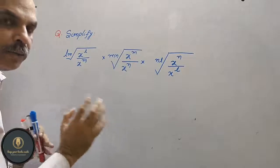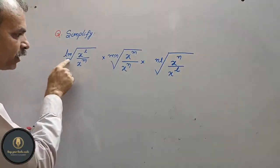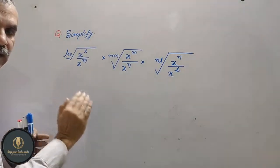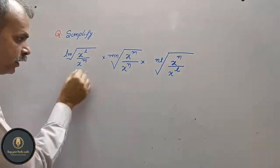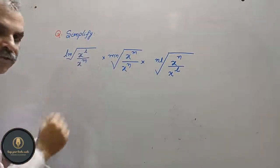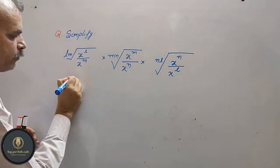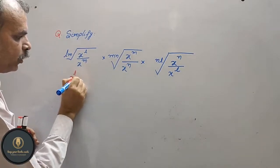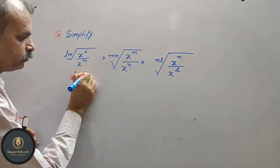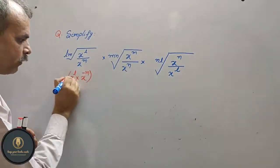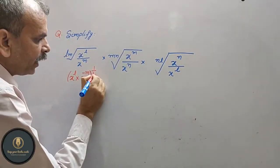Now what do we need to do with this? We need to convert the roots. When you have a root, it becomes power one by something, so we will do that. We will write x to the power of l into x to the power of m, so that becomes x to the power of l minus m, and whole to the power of 1 by lm.